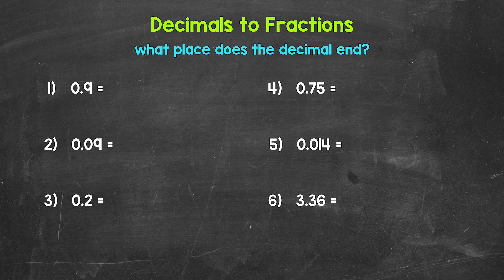Let's jump into our examples, starting with number one. When we convert a decimal to a fraction, we need to take a look at the place the decimal ends — whether that's the tenths, hundredths, thousandths, ten-thousandths, or whatever the case may be. We use that place to determine the denominator of the fraction. Then whatever number we have on the right side of the decimal — the decimal digit or digits — will be the numerator.